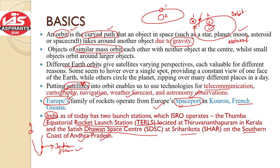Why do we have different types of orbits? Because some orbits provide a single spot or a constant view of one face of the Earth, while some other orbits circle the whole planet, and some may pass over many different places in a day. There are different uses of Earth orbits, and that is why we need to classify them.